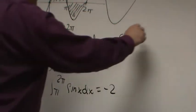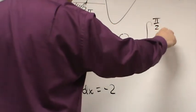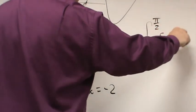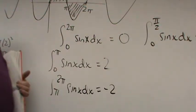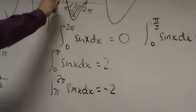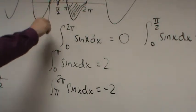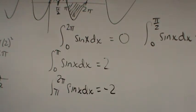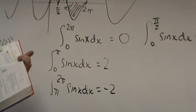What do you suppose the integral from 0 to π over 2 of sine of x dx is going to be? That's 1 — just the first quarter of the sine curve from 0 to π/2.